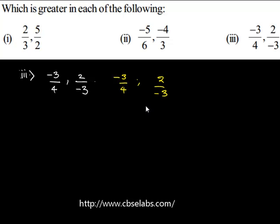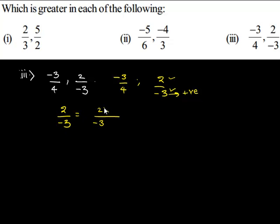So, in order to make the denominator positive, we have to multiply with minus 1 both in the numerator and in the denominator. So, 2 upon minus 3 has to be multiplied by minus 1 both in the numerator and in the denominator. It becomes, 2 times minus 1 is minus 2 upon minus 3 times minus 1 is 3.